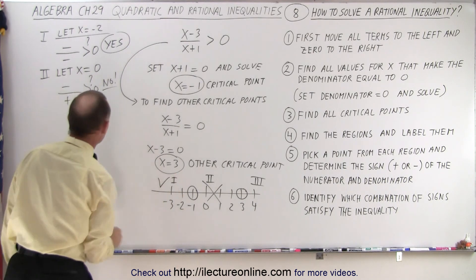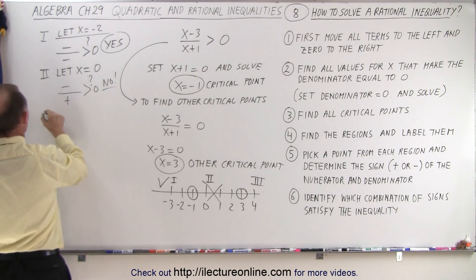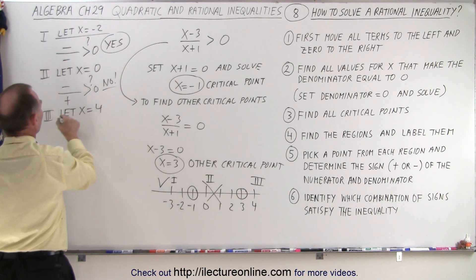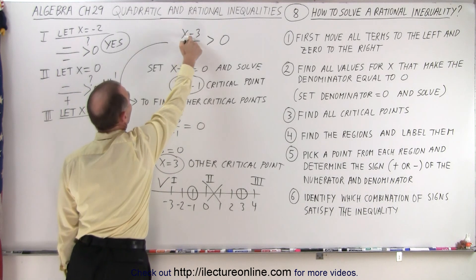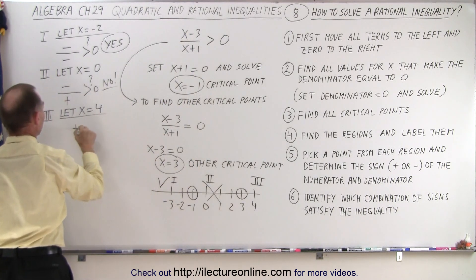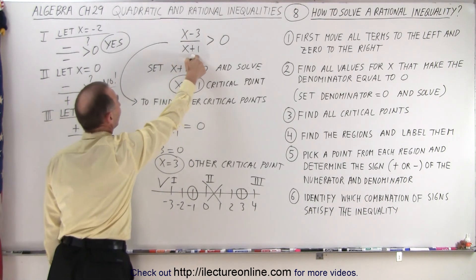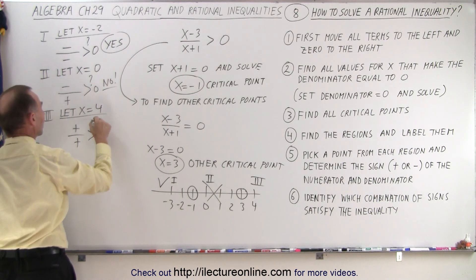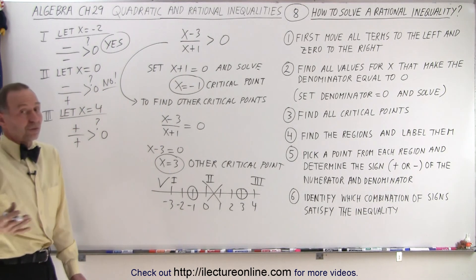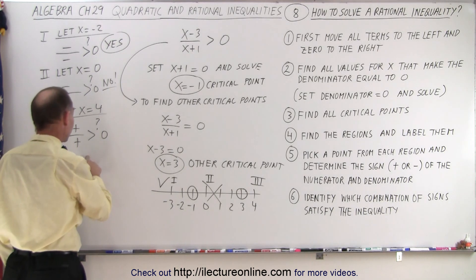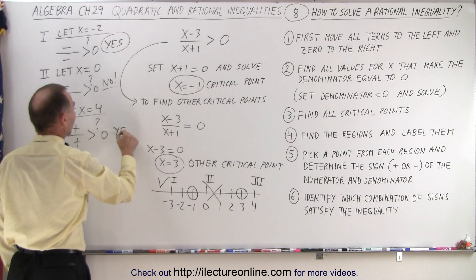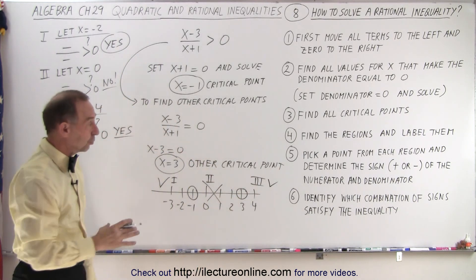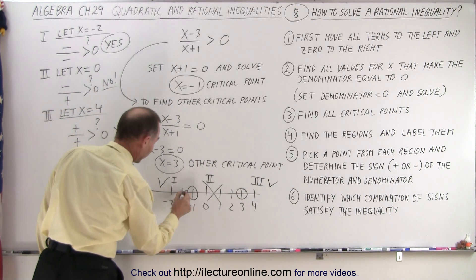How about to the right? Let x equal four — region number three. When x equals four, four minus three is one, that's a positive number. Four plus one is five, also a positive number. So positive divided by positive — is that greater than zero? The answer is yes, positive divided by positive is greater than zero. So region number three is a valid region.